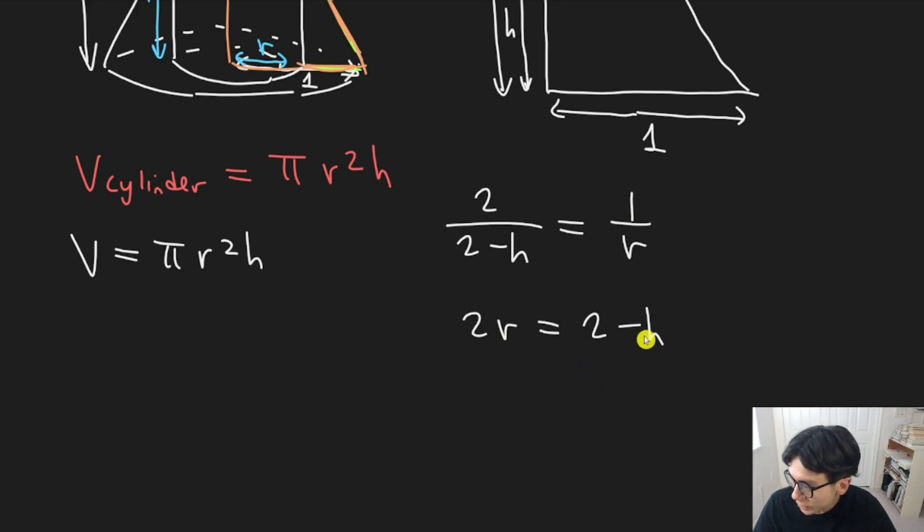Then solving for h, I can rearrange things a bit and I'll get h is two minus two r. Very nice. Now we have h in terms of r and we can substitute that in here.